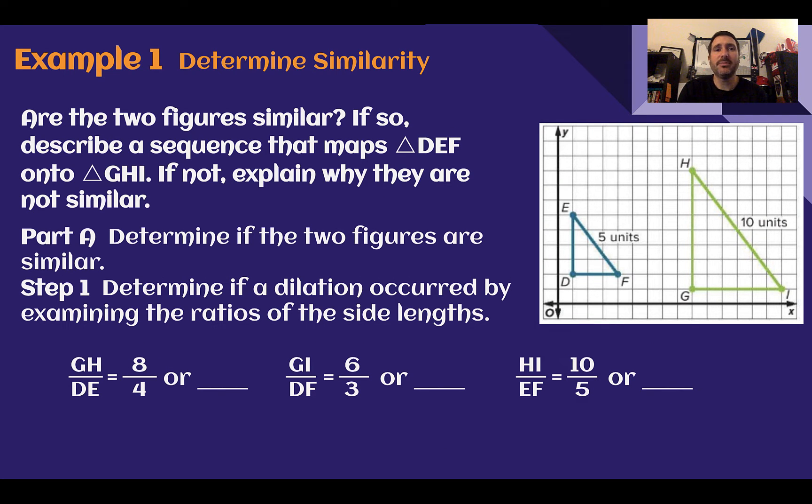Example 1, determine similarity. Are the two figures similar? If so, describe a sequence that maps triangle DEF onto triangle GHI. If they're not, explain why they are not similar. First, anytime we're trying to figure out if they're similar, they need to be multiplied and have the same scale factor. If I just compare corresponding sides, here's a right angle, here's a right angle. So DE must correspond to GH.